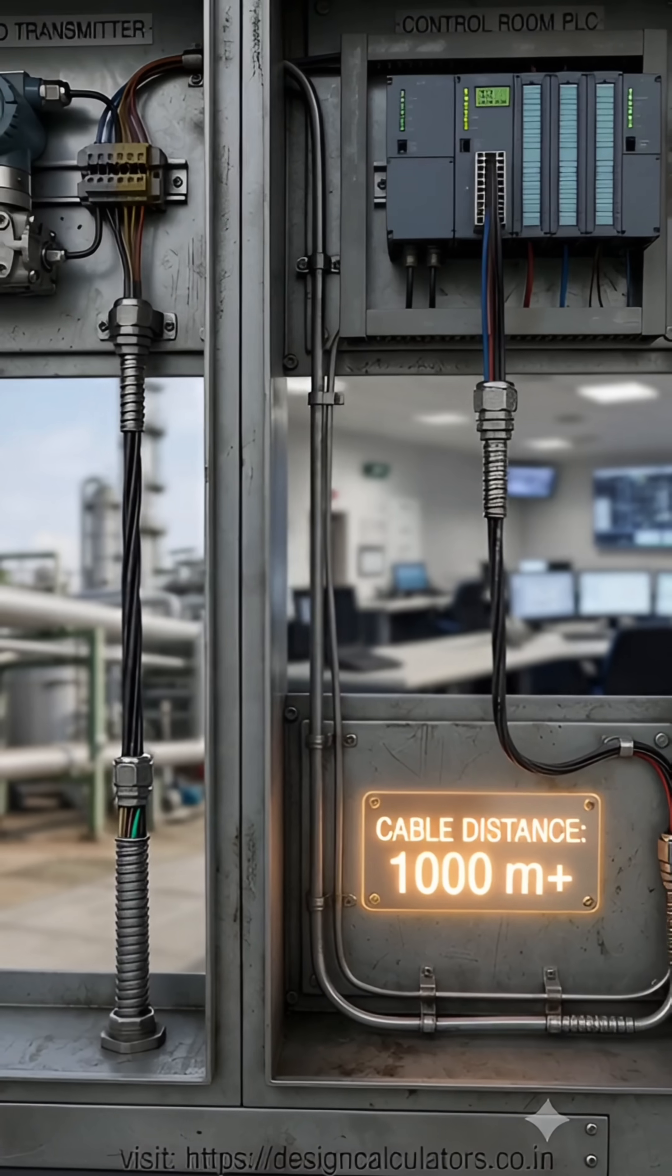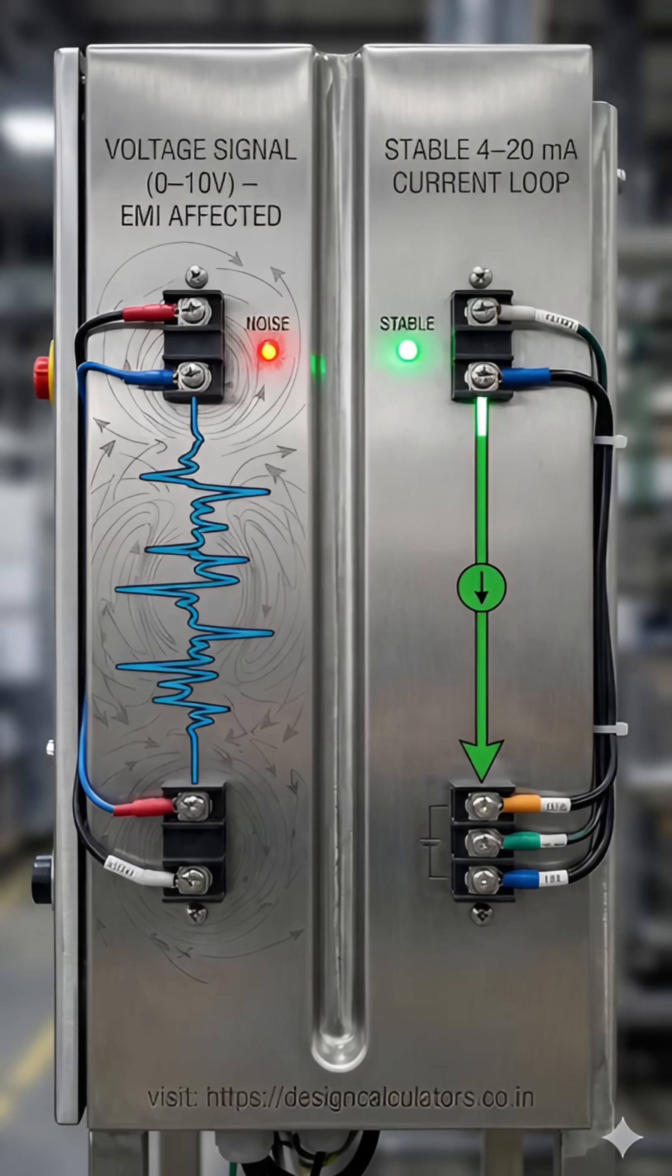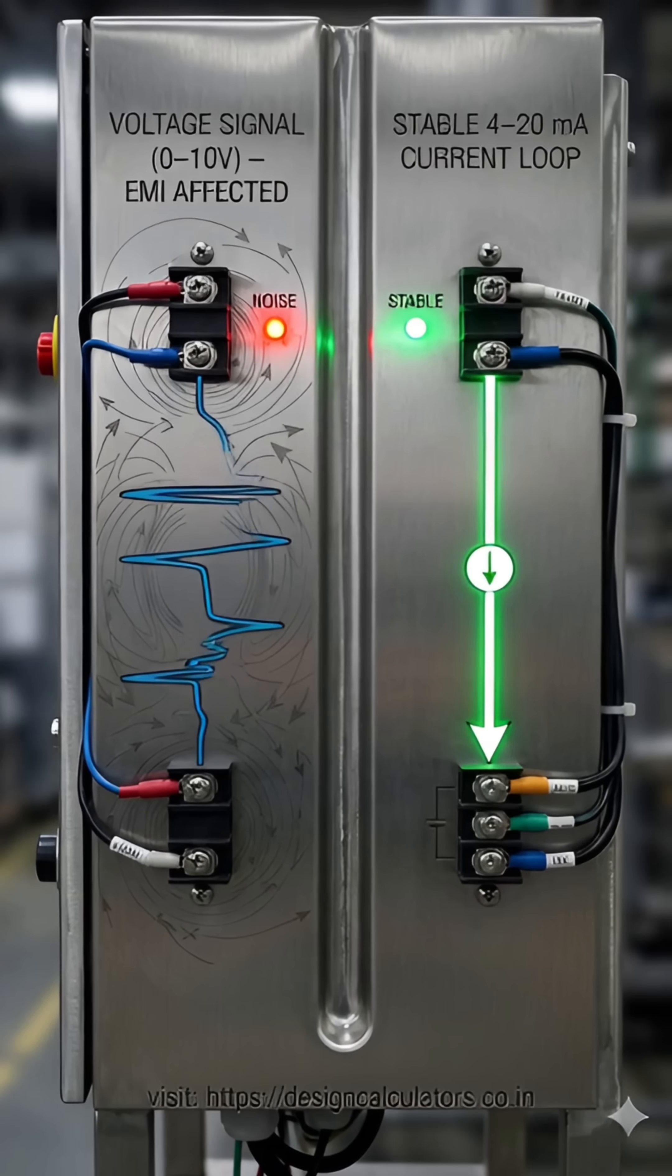Unlike voltage signals, this current travels kilometers without losing accuracy. Electrical noise, spikes, interference, 4 to 20 milliamp ignores them like a champion.